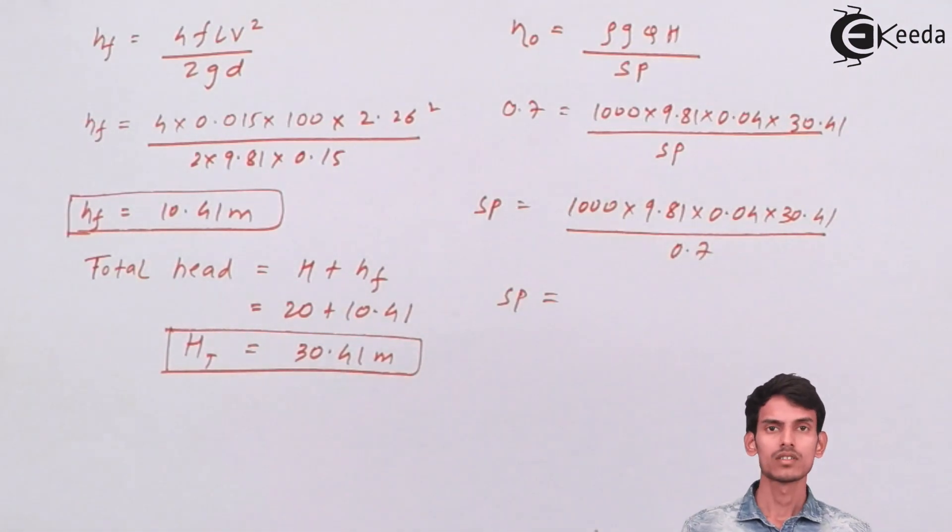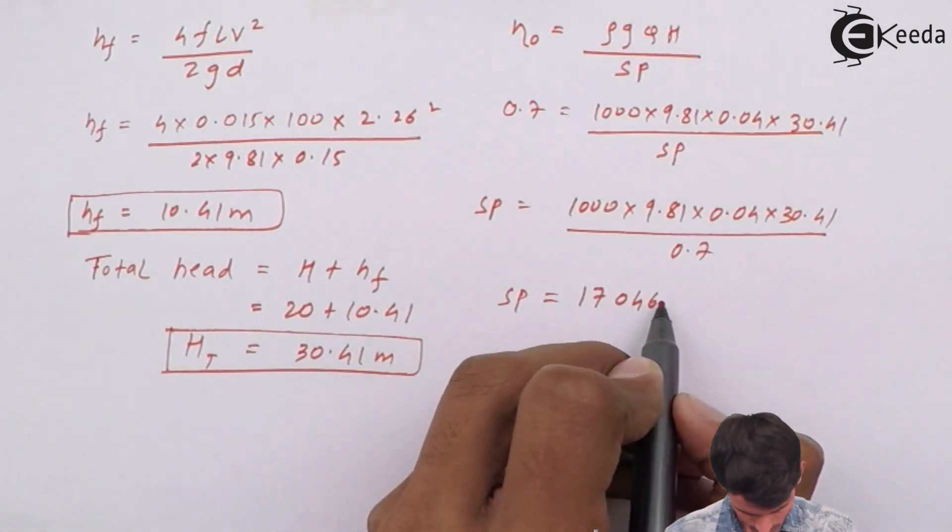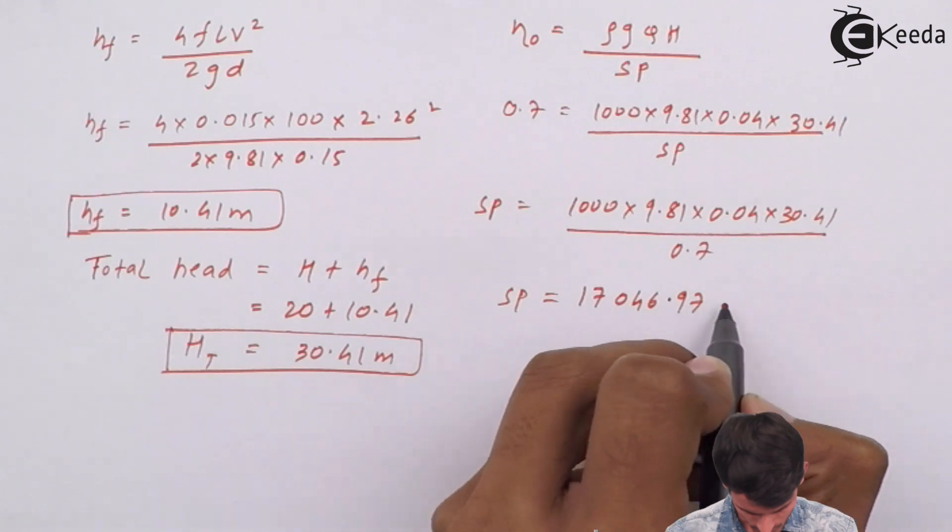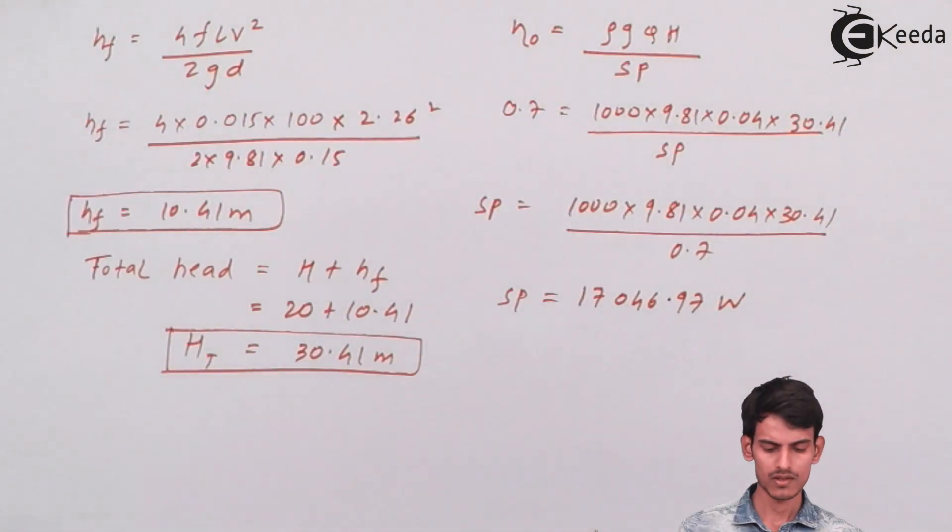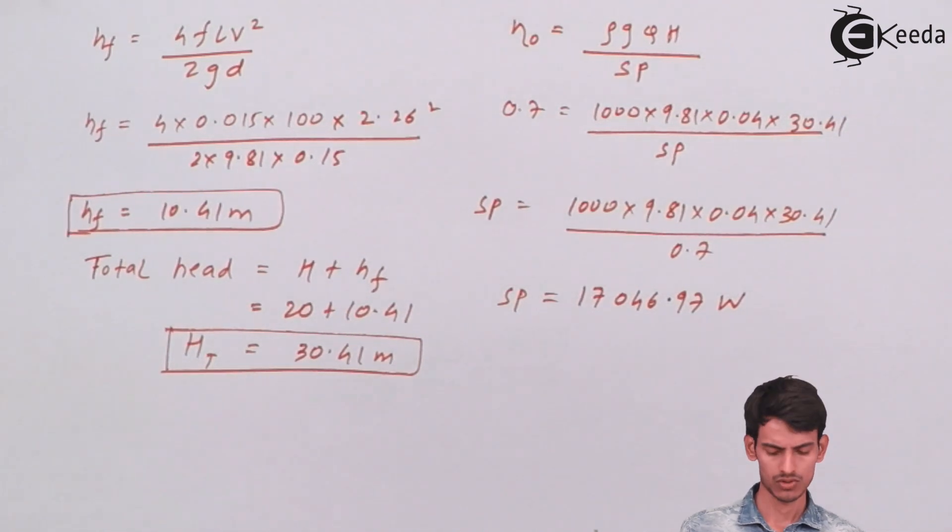Once you multiply the numerator and divide by the denominator, you get the value of shaft power. It comes out to 17046.97 Watts. We can write the power in terms of kilowatts as well - just divide the value by thousand to get the value in kilowatts.